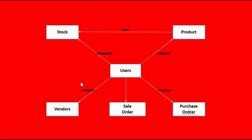Here we have the entities involved in this project. First of all we have users, and we have stock, product, purchase order, sales order, and vendors.